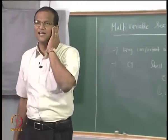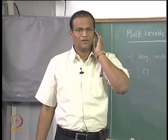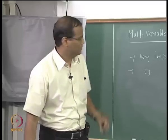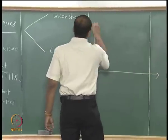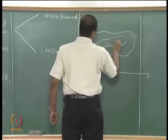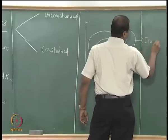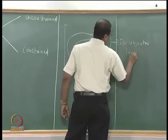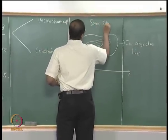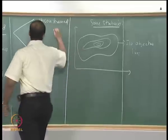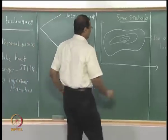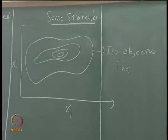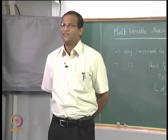Needless to say, constrained multivariable optimization problems are a lot harder to solve compared to unconstrained multivariable optimization problems. Suppose you have these iso-objective lines — let us take some strategies. First we will take the unconstrained optimization problem, and then we will go to the constrained ones which are a lot harder to solve using search techniques. This is a two-variable problem — x1 and x2 can represent the length and diameter of the tubes of a shell and tube heat exchanger.